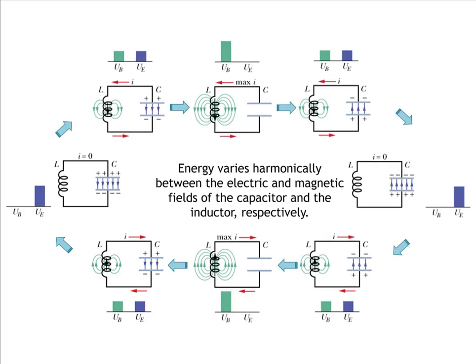The capacitor is finally fully recharged after the inductor has used all of its magnetic potential energy, which is now stored on the plates of the capacitor, with polarization returned to its initial state. In the absence of electrical resistance, this process would continue forever, with charge and current oscillating back and forth harmonically.